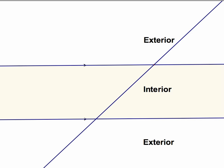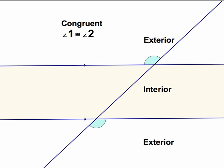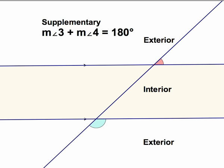A transversal crosses parallel lines to form congruent corresponding angles, congruent alternate interior angles, congruent alternate exterior angles. But same side interior and same side exterior angles are supplementary — they sum to 180 degrees.